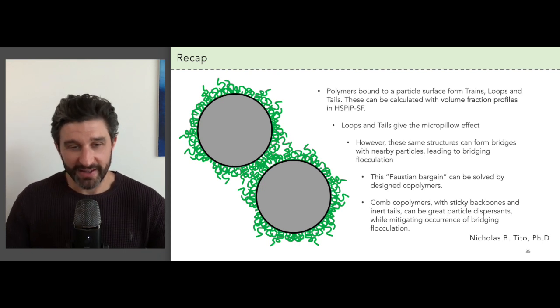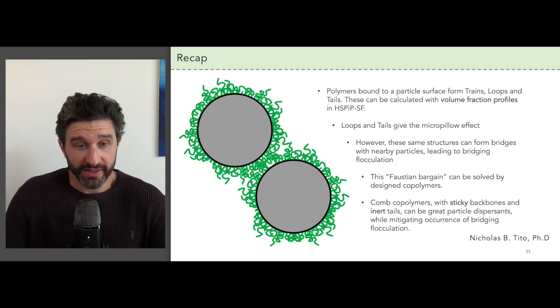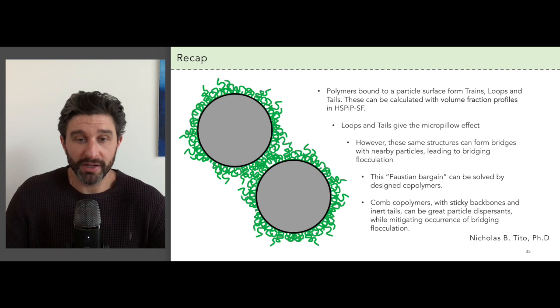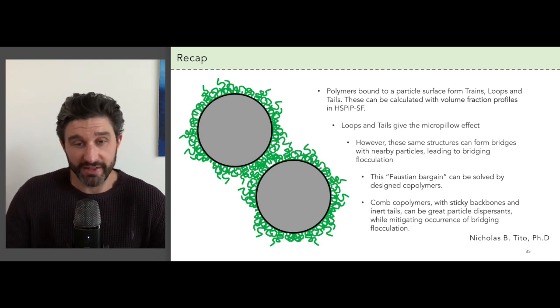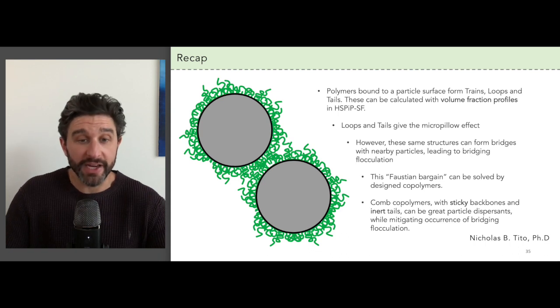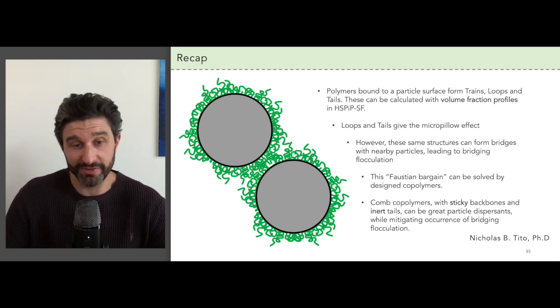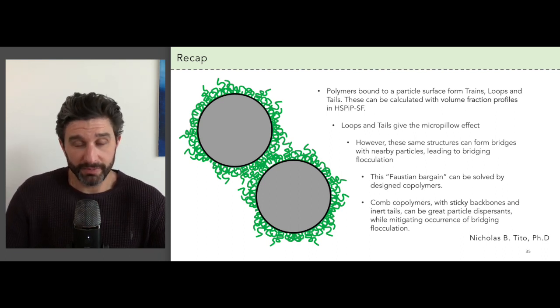All right, so let's recap this case study. We took a close look at the loops, trains, and tails that polymers form when they're absorbed to a particle surface and showed how to quantify these features in a dispersion using HSPIP volume fraction profiles. The loops and tails are what give rise to the micropillow effect, and this is what we want in order to keep the particles dispersed in the solvent.